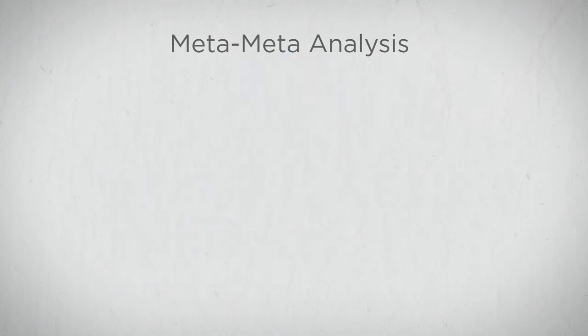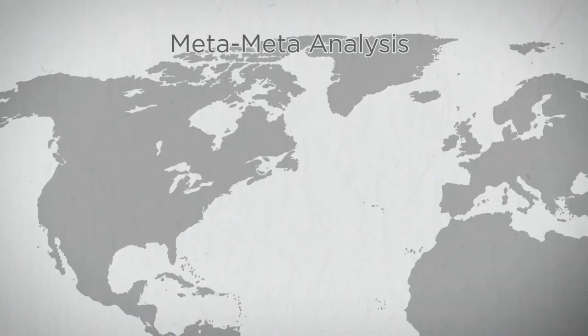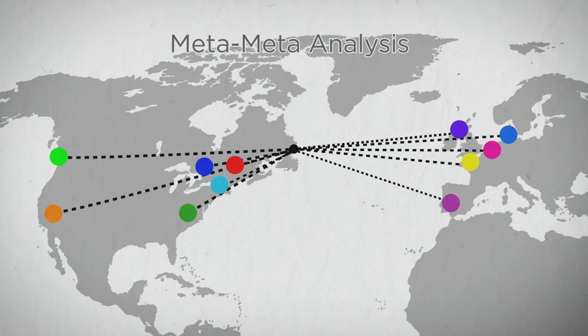What is a meta-meta-analysis? They collected the data from several published meta-analyses that measure differences between autistic people and the typical population, and combined them.